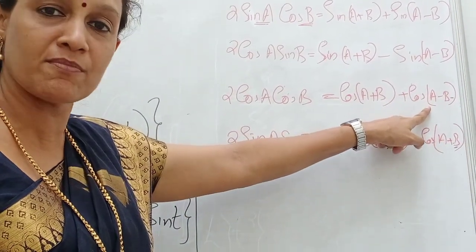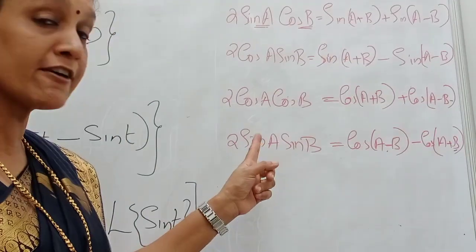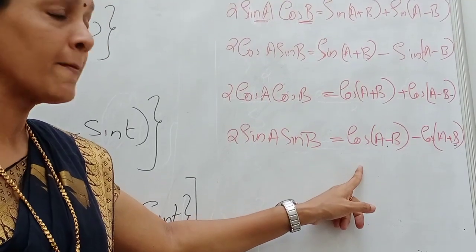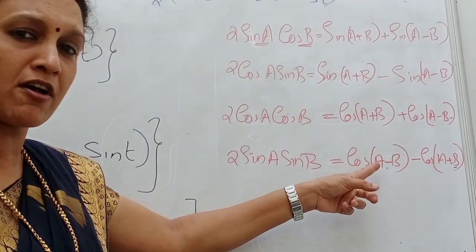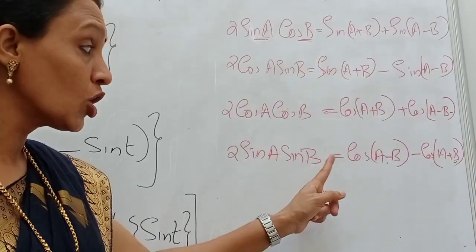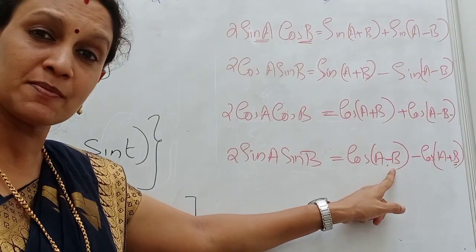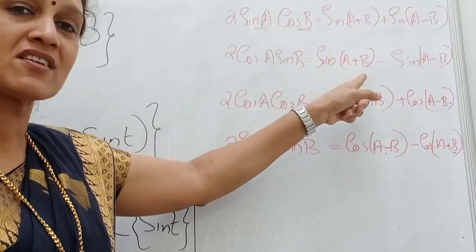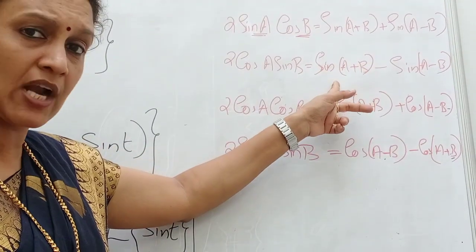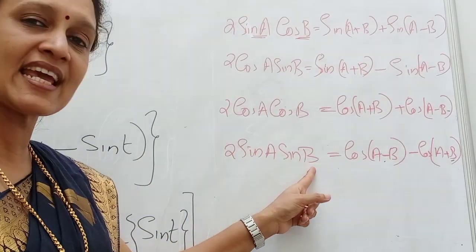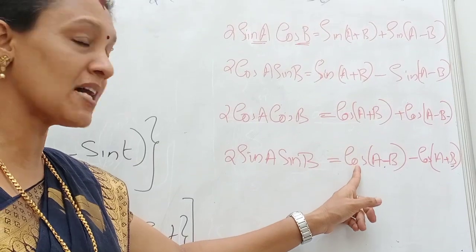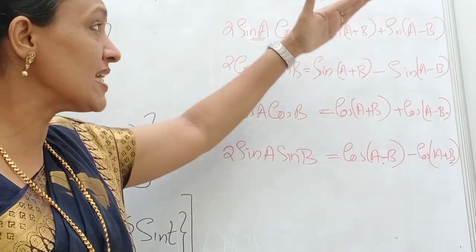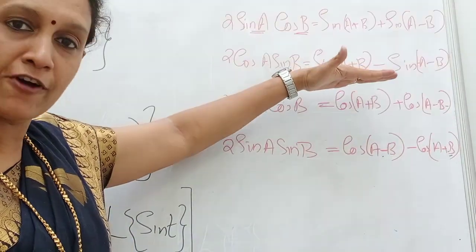The fourth formula is very important — there is a slight difference. 2 sin A sin B is cos A minus B minus cos A plus B. In all the other three results, A plus B comes as the first term, but in 2 sin A sin B, the first term is cos A minus B. These four formulae are called AB formulae.